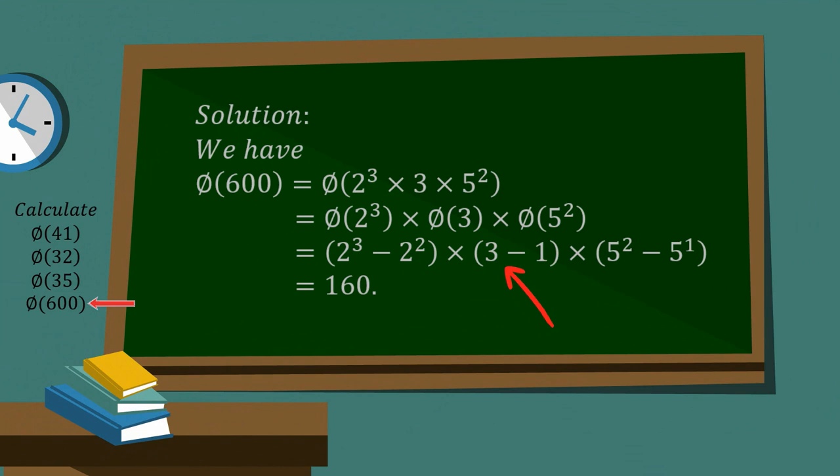Phi of 3, we just use rule number 1, the prime rule. We get 3 minus 1. And phi of 5 squared, we can use the prime product rule. And we get the answer of 160.